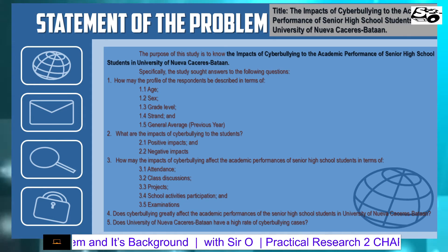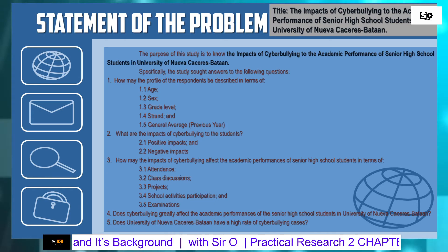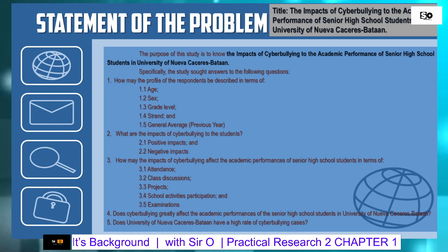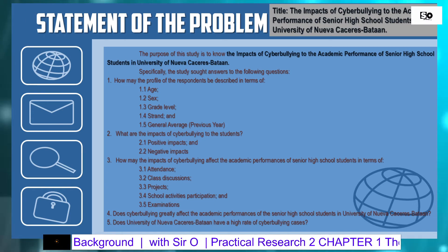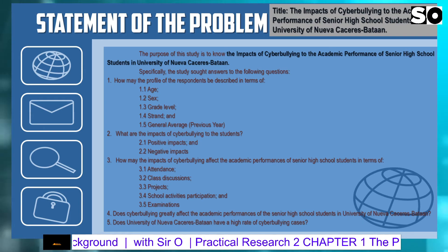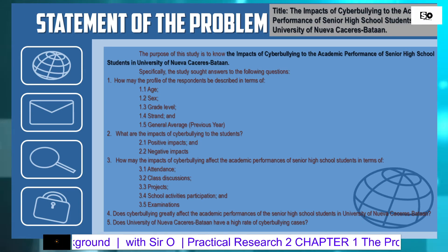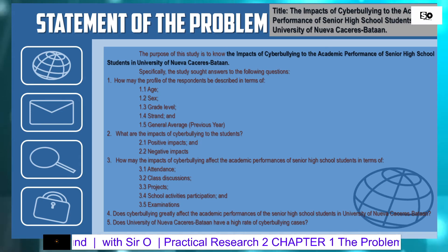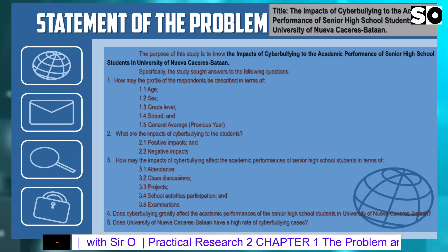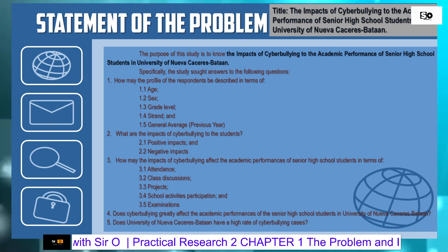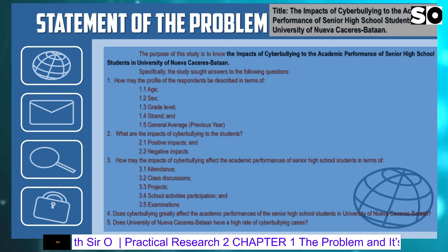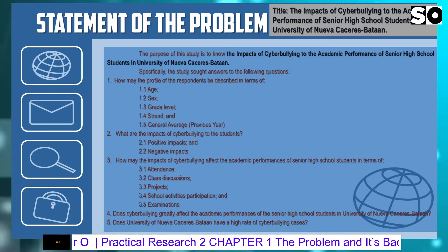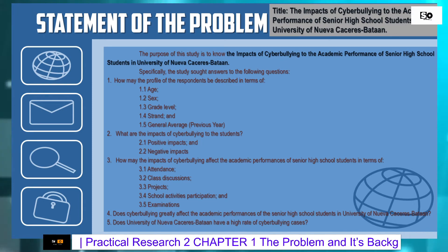Number 2 addresses the impacts of cyberbullying, either positive or negative. Number 3 addresses how the impact of cyberbullying affects the academic performance of senior high school students in terms of attendance, class discussion, projects, school activities, participation, and examinations, along with two additional questions.